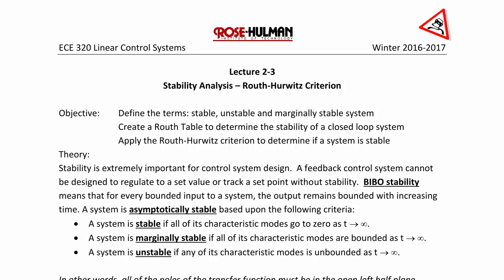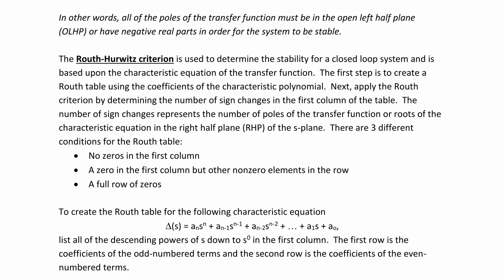Stability is extremely important for control system design. A feedback control system cannot be designed to regulate to a set value or track to a set point without stability. BIBO stability means that for every bounded input to a system, the output remains bounded with increasing time. A system is asymptotically stable if all of its characteristic modes go to zero as t goes to infinity. It is marginally stable if all characteristic modes are bounded, and unstable if any mode is unbounded as t goes to infinity. All poles of the transfer function must be in the open left-half plane with negative real parts for the system to be stable.